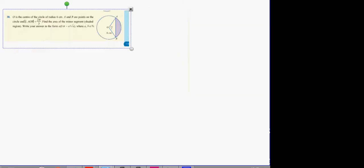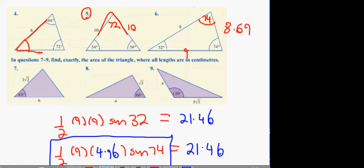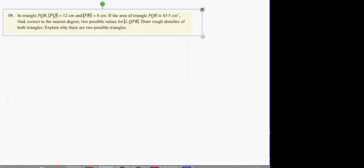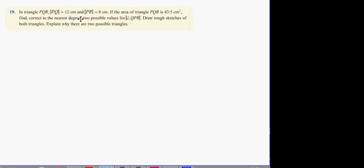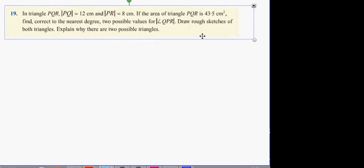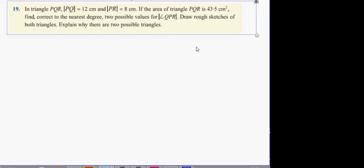To number 19. Okay, so number 19 is back up here. In triangle PQR, PQ is 12 and PR is 8. If the area of the triangle is 43.5 centimeters squared, find correct to the nearest degree two possible values for angle QPR. Now guys, this is an interesting question because you're going to have to do sine inverse and you're going to get two answers in the first and second quadrant. I'm going to show you how this works.